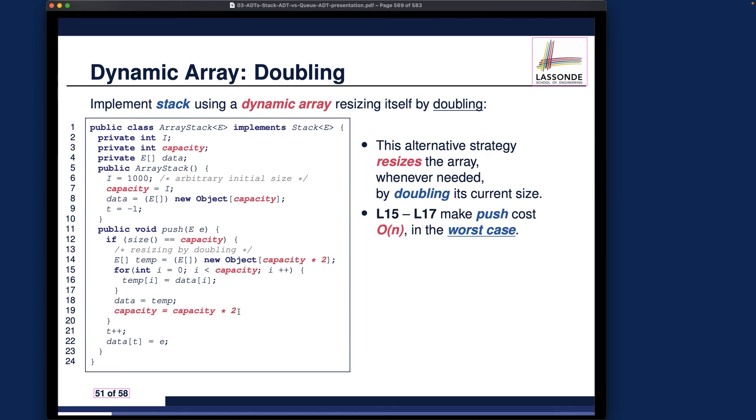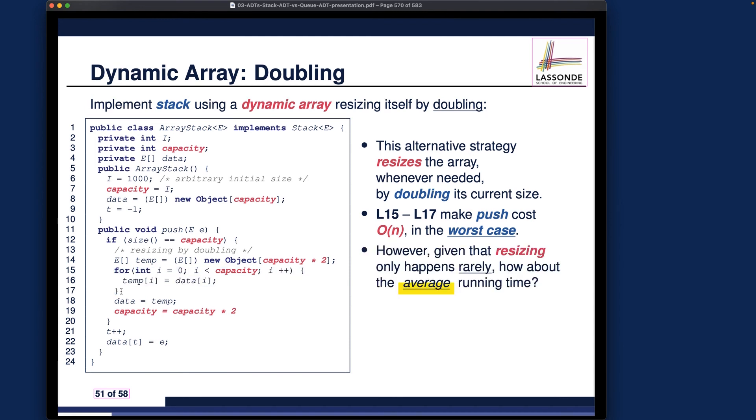And also we got, if you ask me about what's the worst case running time for this, it would be just big O of N because of this particular loop. Because you're trying to copy over the old contents into the new array. In that case, it would just be big O of N, worst case wise. However, as I said before, this block of code, let me repeat again,